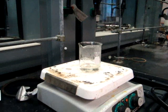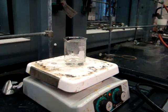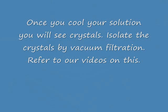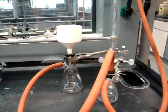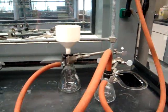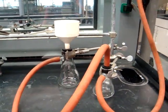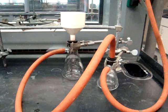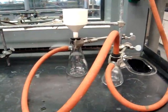You'll be recrystallizing the whitish residue that you get after rotovaping in ethyl alcohol and water. If you have any questions regarding recrystallization, refer back to the videos on crystallization. Once that is complete, you'll need to do a suction or vacuum filtration. You will get whitish crystals as your product — make sure that you weigh your crystals and take a melting point.